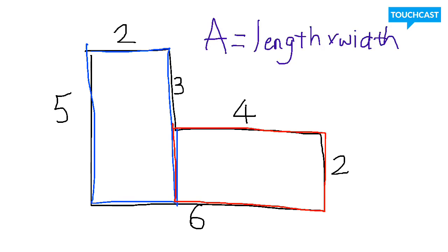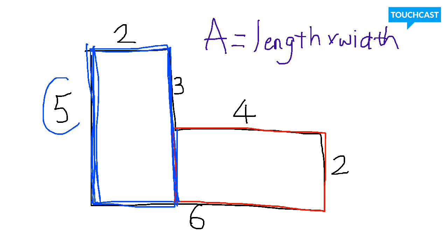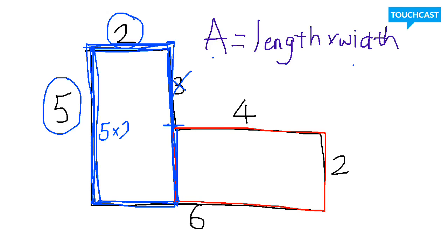Let's take a look at blue. So what two side lengths are important? We have the length of this, which is also the same as the length of this. What is the length? That's easy, it's just five — I'm going to circle it because five is important. Three is not important; three is just this length right here, so I'm crossing it out. Now what is the width? It's two. So if area equals length times width, five times two equals ten.